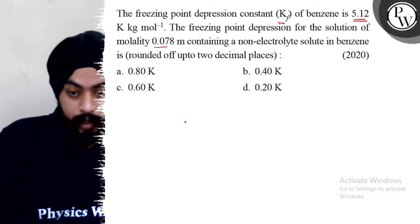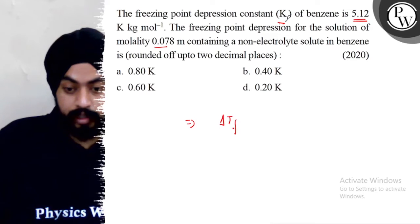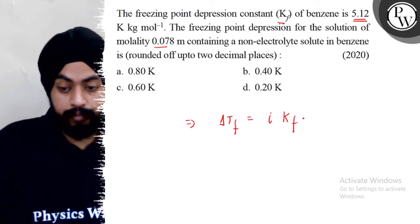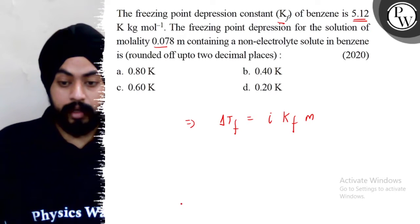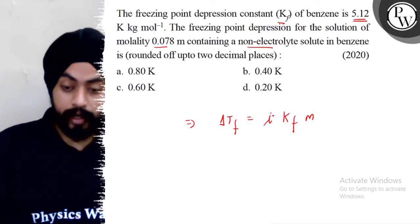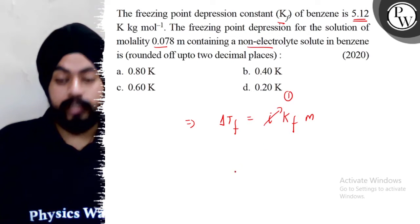We know that delta Tf, the depression in freezing point, equals I Kf m. For a non-electrolyte solution, the I value is 1.